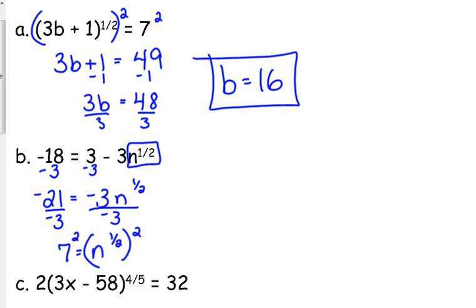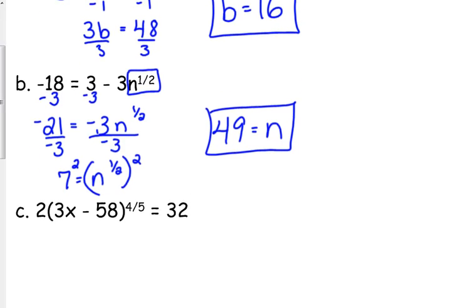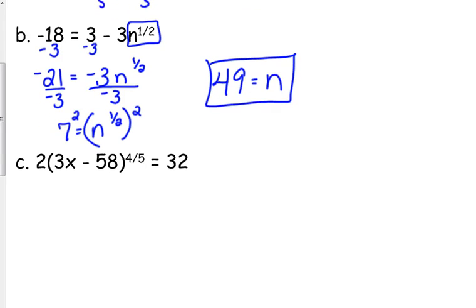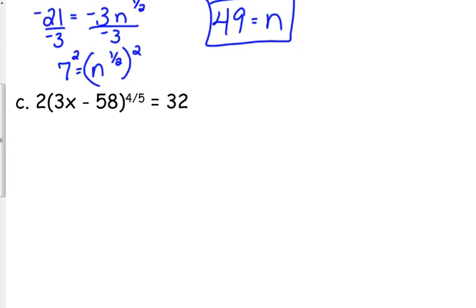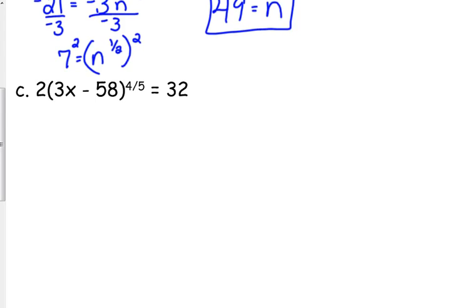So we get 7 is equal to n to the one-half. Finally, we square both sides. So we get 49 is equal to n. I could check it. I'm not going to go through that process, but I could plug that into the calculator to check. So, that wasn't really any different from what we've just done the last two days. Let's look at one that is.